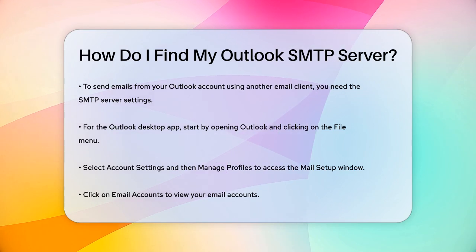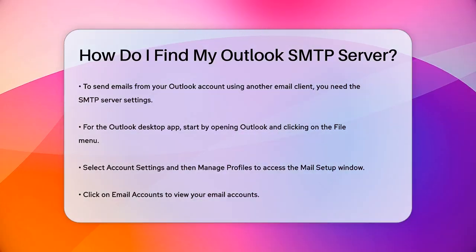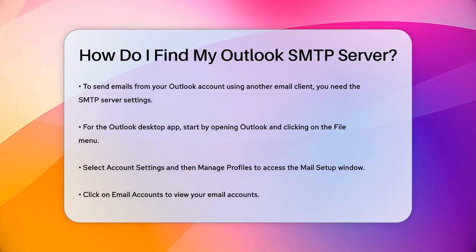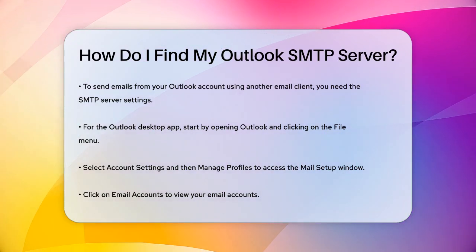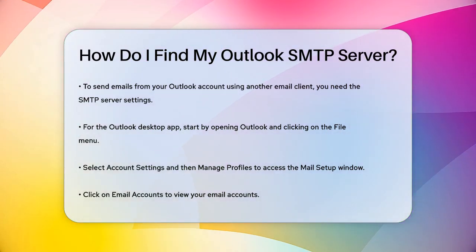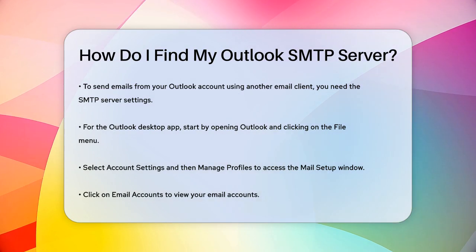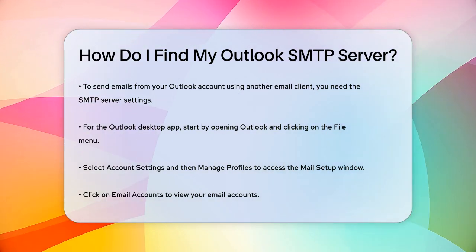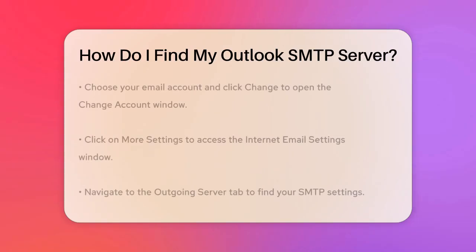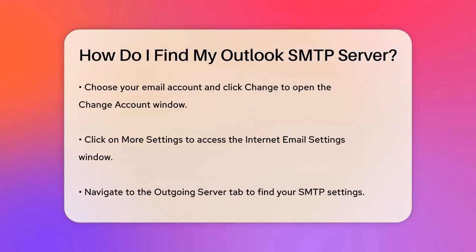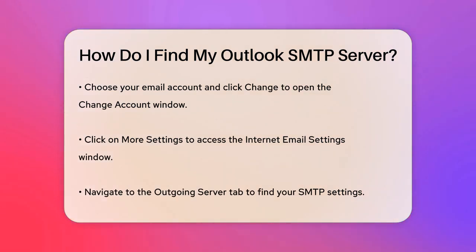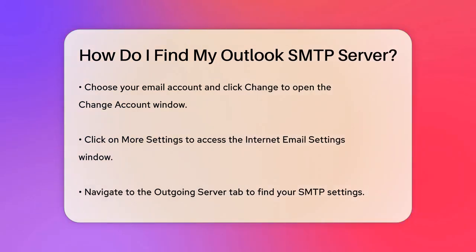First, let's start with the Outlook desktop app. To find your SMTP settings, you need to go into the account settings. Open Outlook, click on the File menu at the top left corner, then select Account Settings and choose Manage Profiles. This will open a mail setup window where you can click on Email Accounts. Select your email account and click Change. In the Change Account window, click on More Settings. Here you'll find the Internet Email Settings window. Go to the Outgoing Server tab and you'll see the SMTP settings.